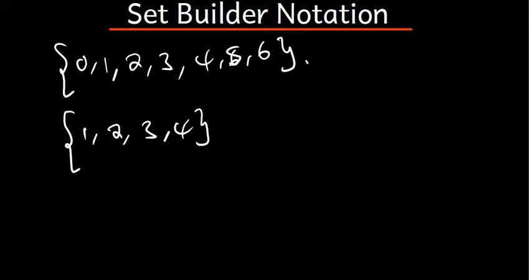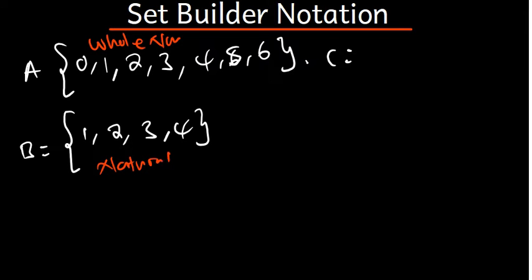Let's say this is set A, set B, and set C. Set C — since we're starting from zero — these are whole numbers. Set B starting from 1 gives us the natural numbers. And for integers, let's say we have a set starting from negative 2: negative 2, negative 1, 0, 1, 2.